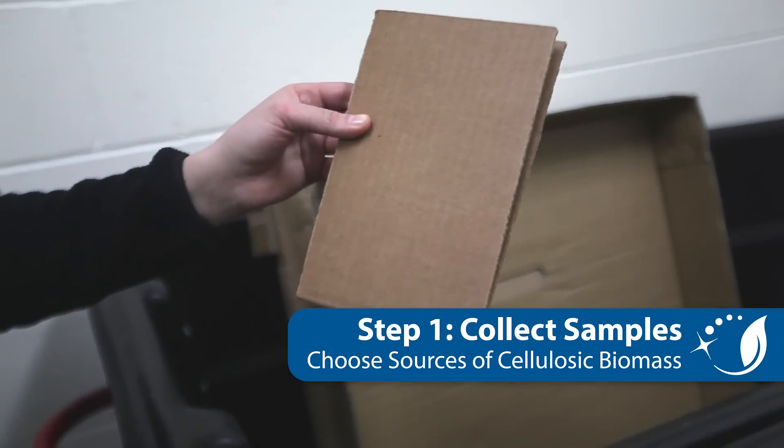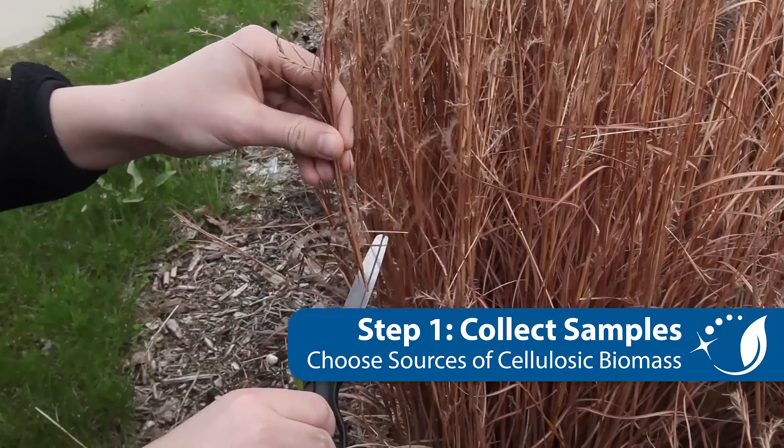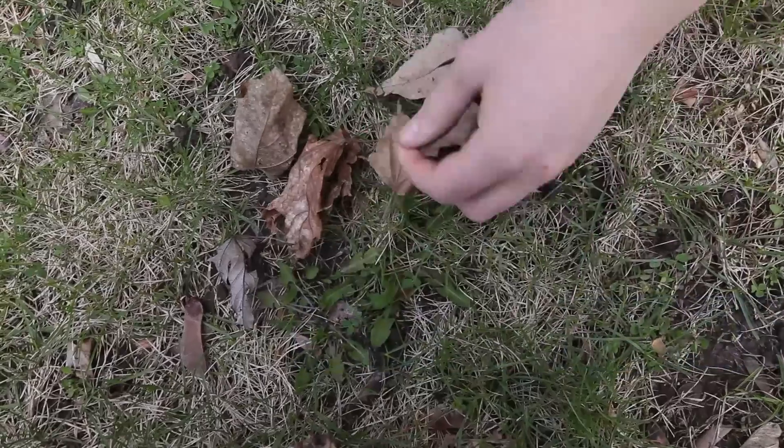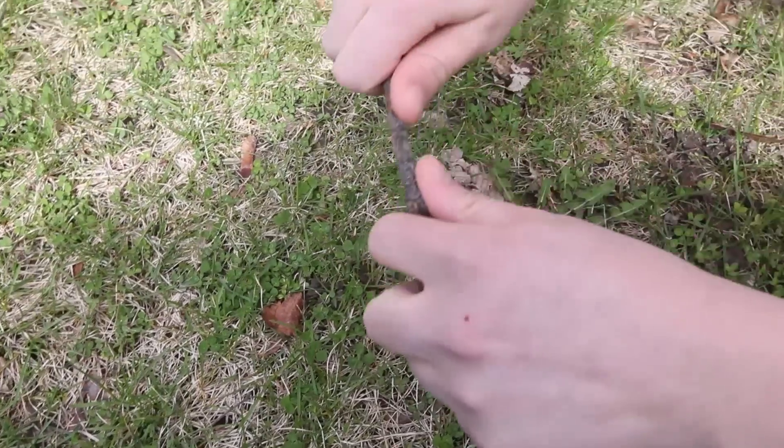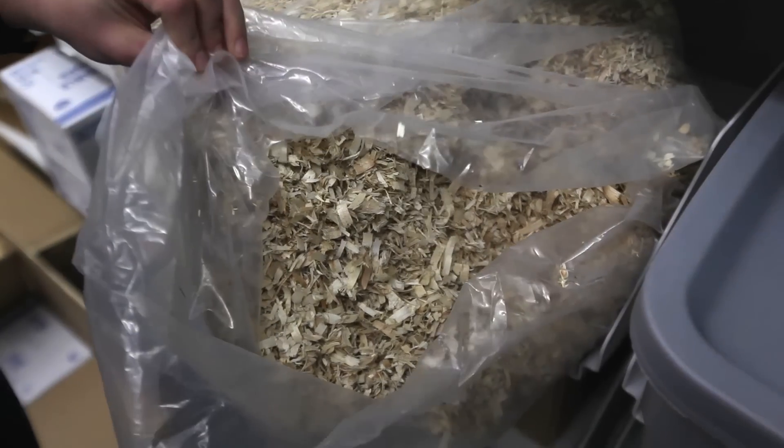The first step of the CB2E lab is to collect various samples of cellulosic biomass to ferment. Cellulose is a primary component of the plant cell wall and can be found in cardboard, paper, dried grasses and leaves, sticks, and pet bedding. Be creative in your search.